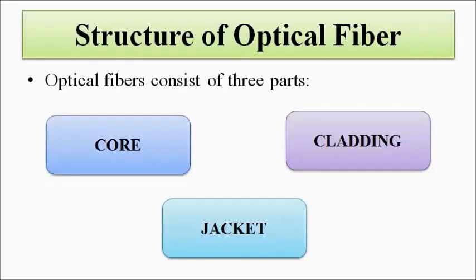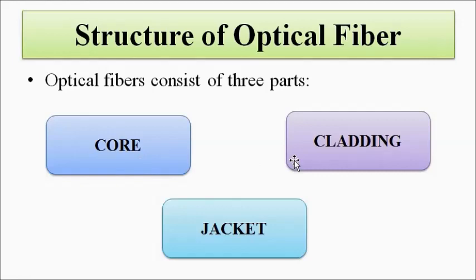About the structure of the optical fiber: the optical fiber has three main parts. First is the core — it is the innermost part. Then we have the cladding, which is a sort of coating over the core. And then we have the jacket, which covers the core-cladding combination. So three parts: core, cladding, and jacket in an optical fiber.